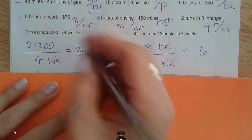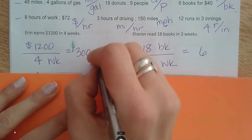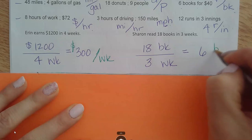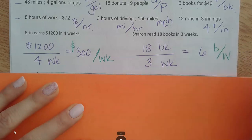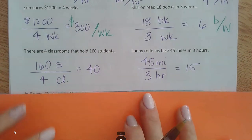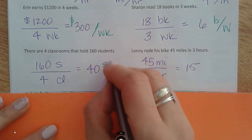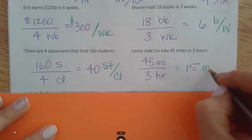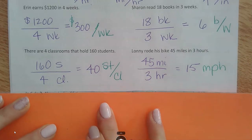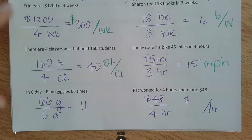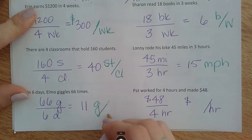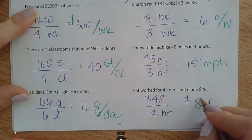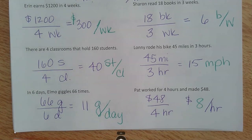I divide it and label it: dollars per week. Books per week. 40 students per classroom. Miles per hour or MPH. How many giggles per day. And this gives $8 per hour. That is video one.